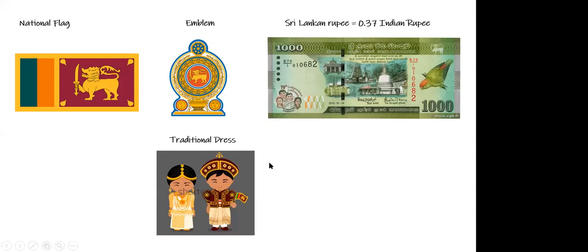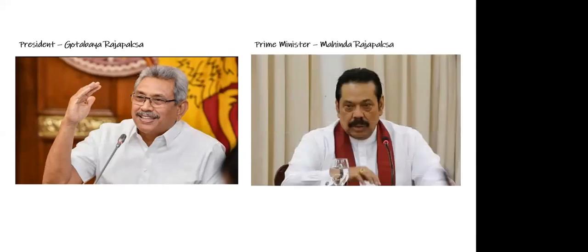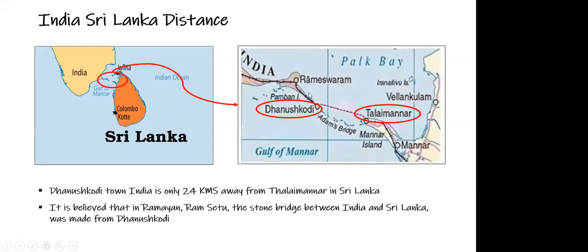This is the traditional dress of Sri Lanka. The president is Gotabaya Rajapaksa, and the prime minister is Mahinda Rajapaksa. They are both brothers. This slide shows the distance between Sri Lanka and India. Here is Dhanushkodi, which is a part of India, and Talaimannar is a part of Sri Lanka. Dhanushkodi is only 24 kilometers away from Talaimannar. It is believed that in the Ramayana, Rama used the stone bridge between India and Sri Lanka built from Dhanushkodi.